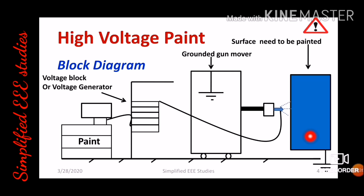Whenever the object is connected to the ground, the object acquires a positive charge. As you know, ground is a universal acceptor. So by connecting the metal surface directly to the ground, the metal surface becomes positively charged. The paint particle has a negative charge and the metal surface has a positive charge. Applying the laws of electrostatic attraction, the negative charge of the paint particle is directly attracted towards the metal surface, and then painting is completed. This type of painting is generally known as the high voltage painting system.